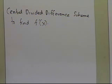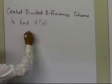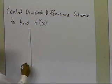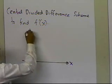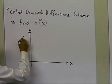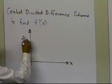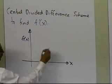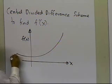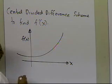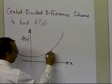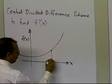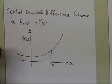Let's go ahead and look at it graphically — what the central divided difference scheme means. So if we draw a graph here, this is x, this is the function f(x) of which we want to find the derivative. Let's suppose the function f(x) looks like this, and what I want to do is find the derivative of this function at this particular point x.